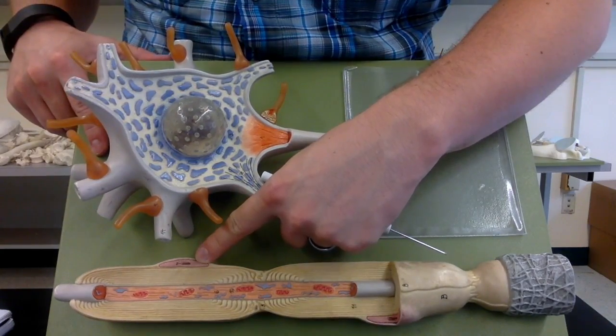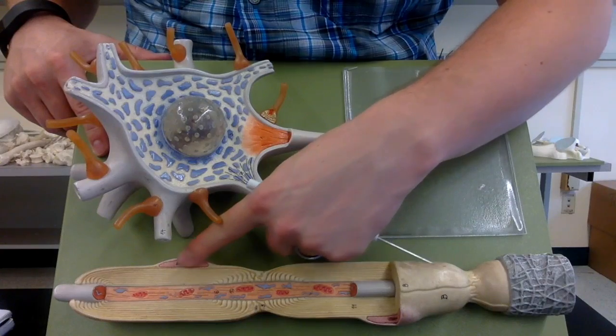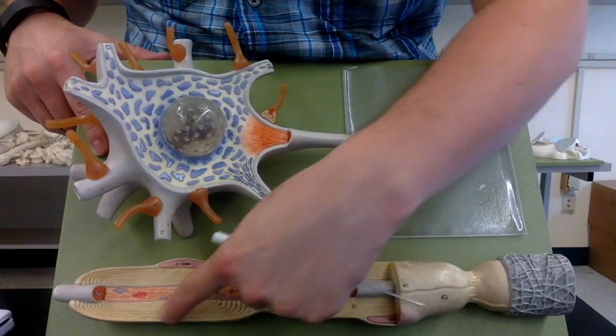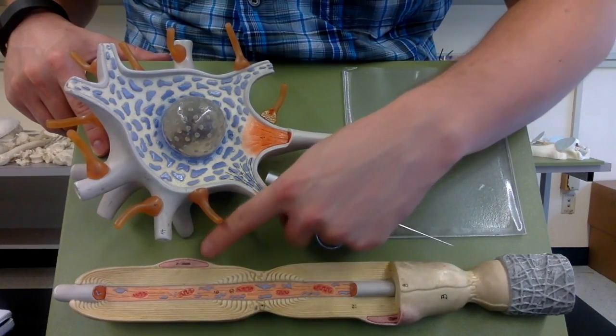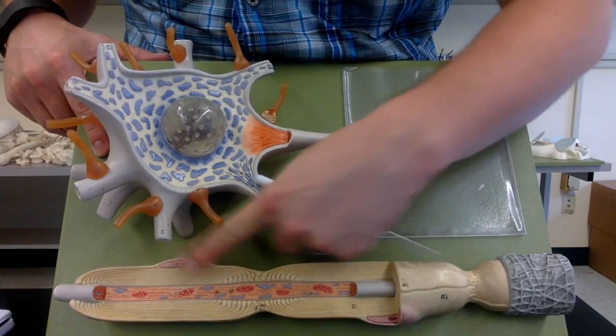This is either going to be a Schwann cell or an oligodendrocyte. It depends what we're talking about. In the peripheral nervous system, the Schwann cells create these white structures. In the central nervous system, the oligodendrocytes create these white structures.